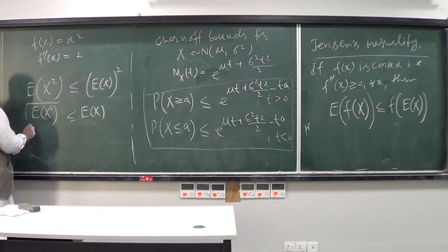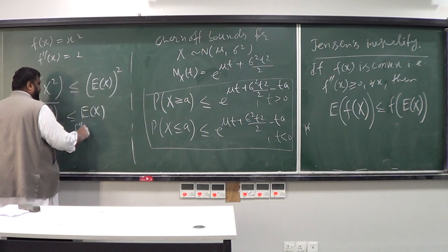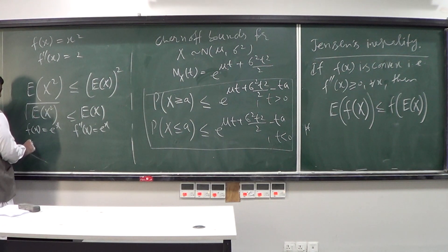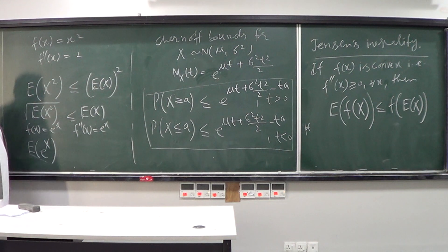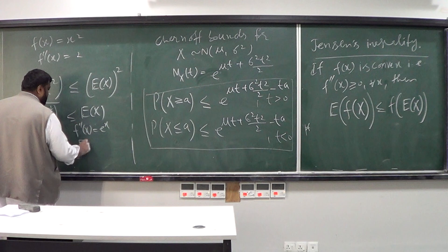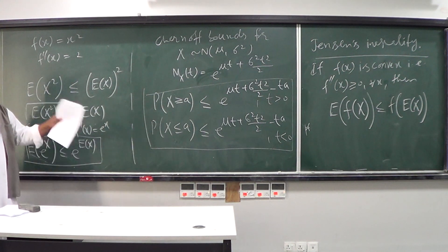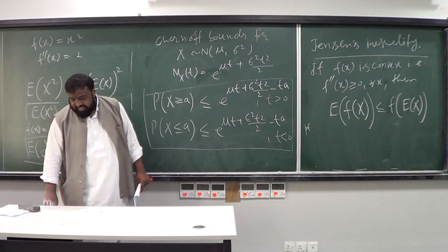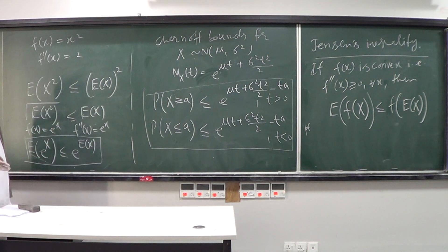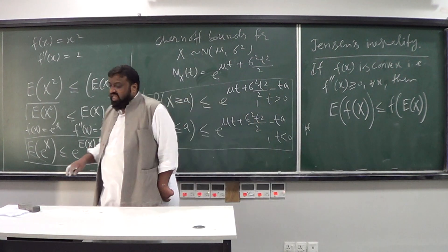Another convex function is f(x) = eˣ, since f''(x) = eˣ is always positive. By Jensen's inequality you get something interesting: E[eˣ] ≥ e^(E[x]). We will see in our stochastic calculus course that there are different versions of Jensen's inequality, including a conditional Jensen's inequality, which has many interesting consequences.